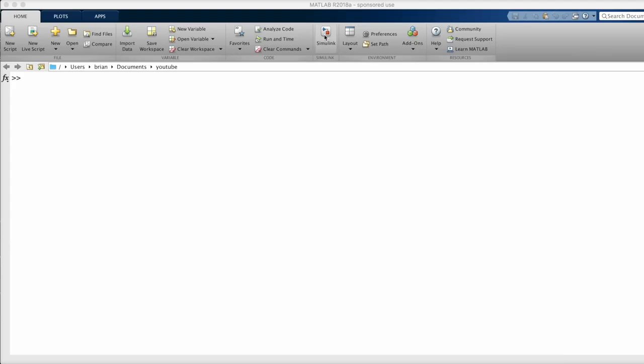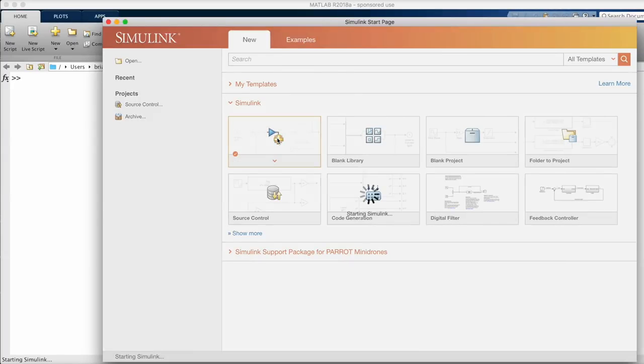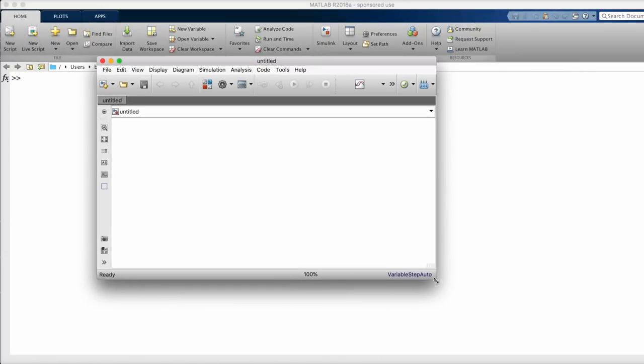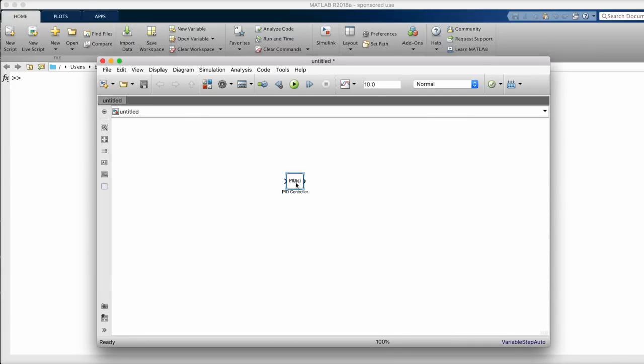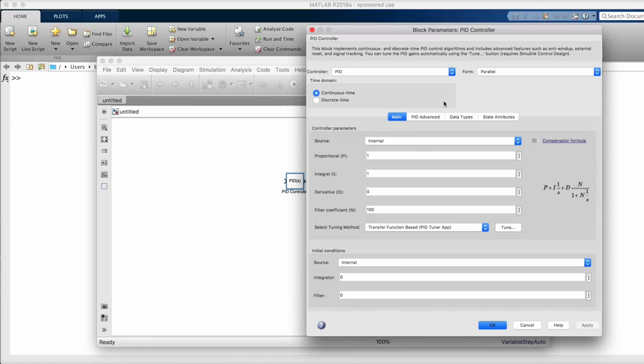So at this point, let's go over to MATLAB and launch Simulink. We just need a blank model to start and I'll add the PID controller block to it. When you double click this block to open up the parameters, you'll notice that you have control over both the derivative gain and the filter coefficient, n.